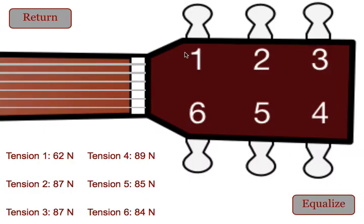Students can change the tension in each string individually by just clicking on the tuning knobs. Or if students want, they can equalize all the tensions to whatever the value of string one is. So if they get a different value for string one, they can equalize all the strings to that same tension.